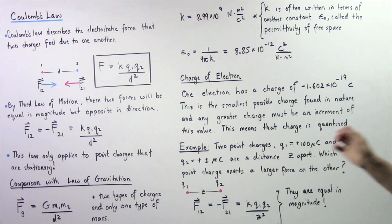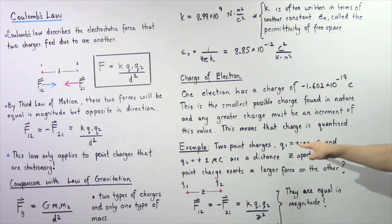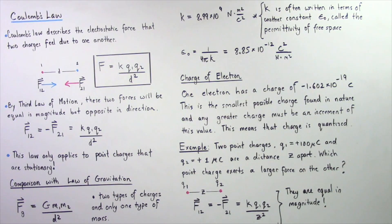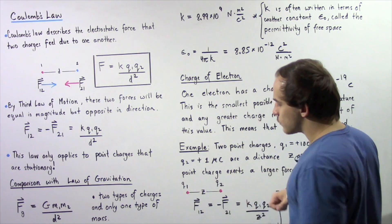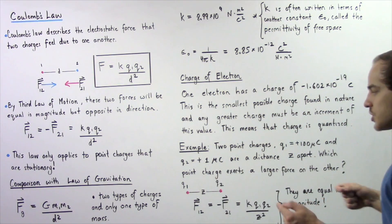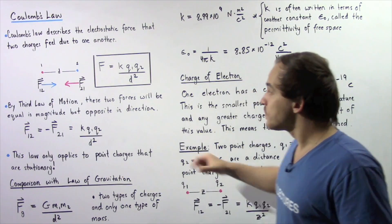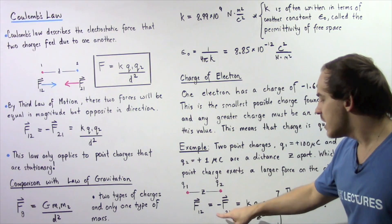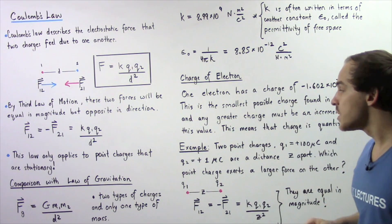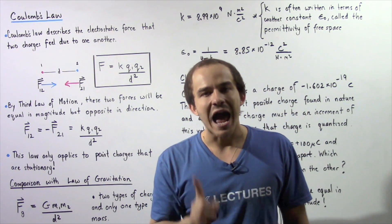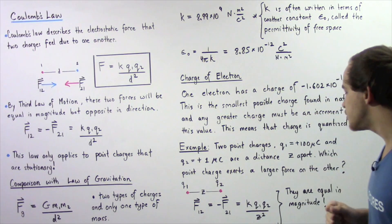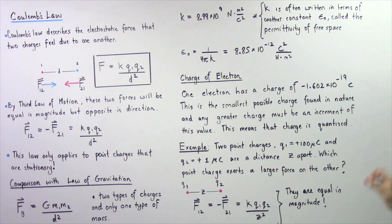Consider two charges: point charge Q1 with a charge of +100 microcoulombs and point charge Q2 with a charge of 1 microcoulomb, separated by a distance Z. Which point charge exerts a larger force on the other? By Newton's third law, the force that point charge 1 feels due to point charge 2 and the force that point charge 2 feels due to point charge 1 have the same exact magnitude — they are action-reaction forces, equal in magnitude but opposite in direction.